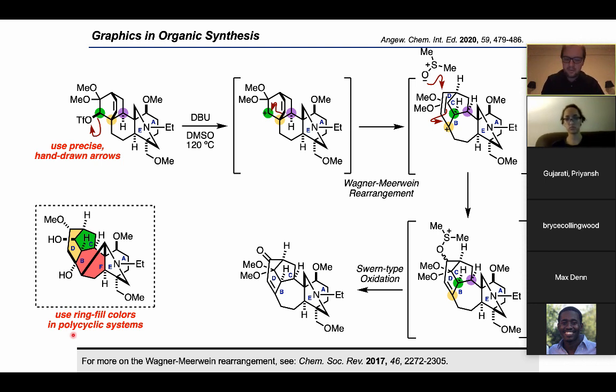It's also nice in polycyclic systems to use ring fill colors. That makes it a bit more visually appealing to see the ring systems that have formed. And finally, in a mechanism that involves rearrangements, I think it's also nice to use colored circles in the background of the atoms in order to make it more visually easy for the viewer to see which atom is becoming which atom in the product. So it's a bit easier to follow.